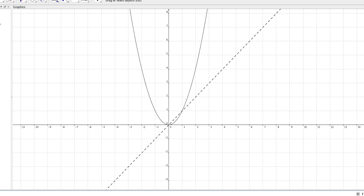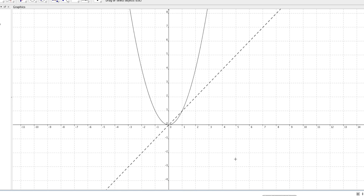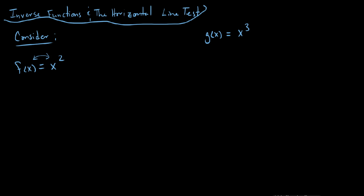When we've been discussing inverse functions, we say the domain and range have been switched. What this causes to happen is when we graph it, we see that it is reflected about the line y equals x. I want you to consider all of the points on this original graph if they are reflected about that line.